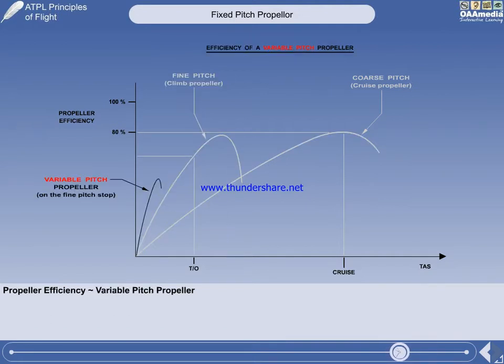This type of propeller is called a variable-pitch propeller. The plot shows a variable-pitch propeller at low speed, with the blades on the fine-pitch stop. This will give maximum efficiency during the initial take-off run.